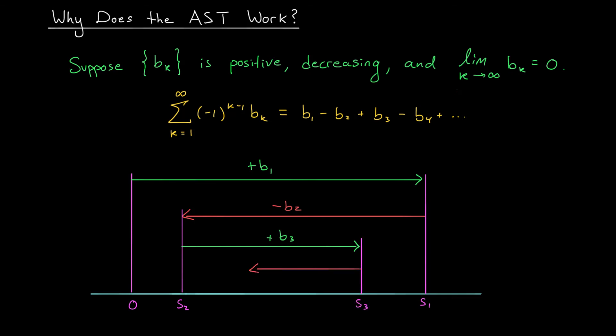I'm going to keep going back and forth, back and forth. But since my terms are decreasing, I never move as far back as I was before. Finally, since our terms are tending to zero, the changes we see at each stage are getting smaller and smaller and smaller. This means that our partial sums are really honing in on some finite value. The limit of the partial sums exists, and it's finite. And therefore, our series converges.